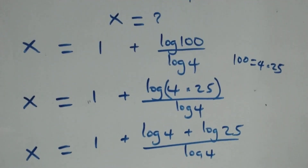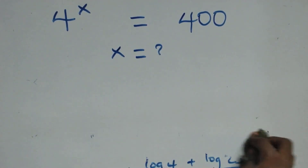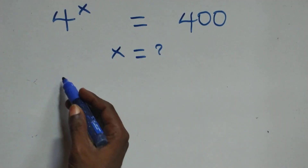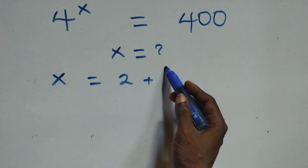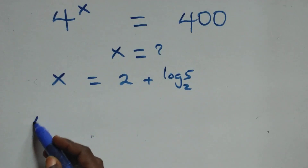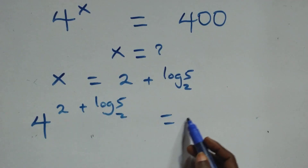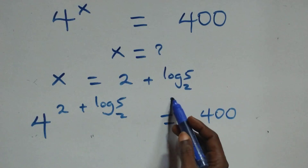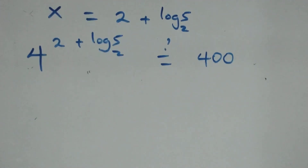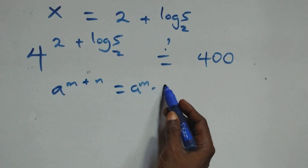Let's check if this satisfies the given problem. We substitute the value of x, which is 2 plus log 5 base 2. So we have 4 raised to power 2 plus log 5 base 2 equals 400. We apply the law of indices: A raised to power M plus N equals A raised to power M times A raised to power N.